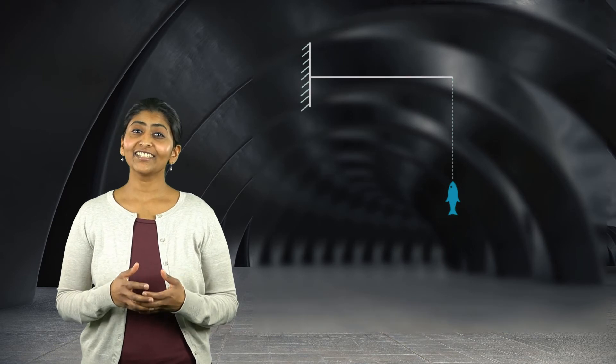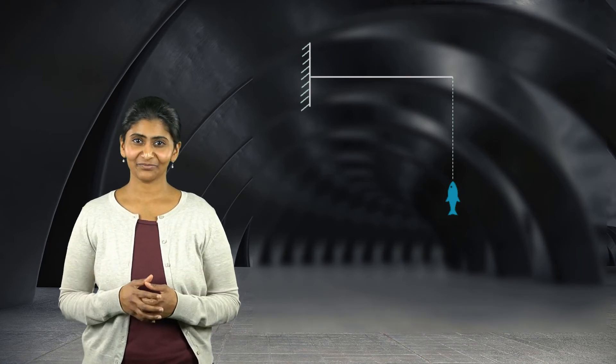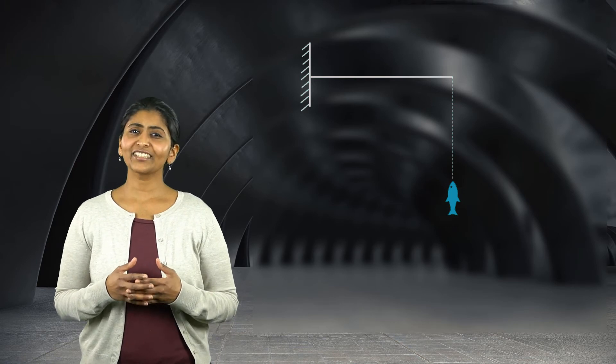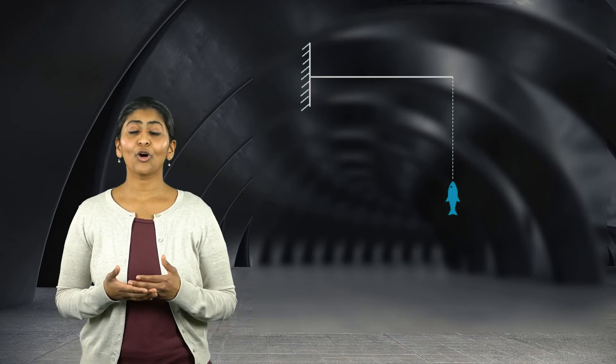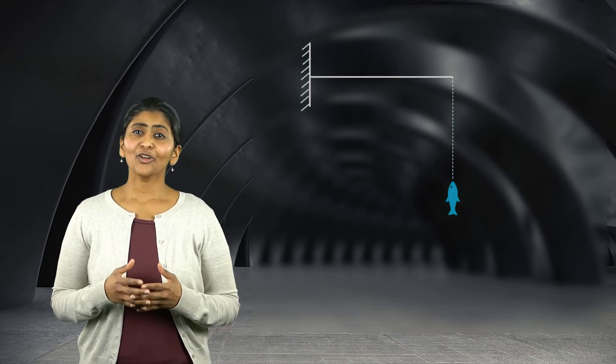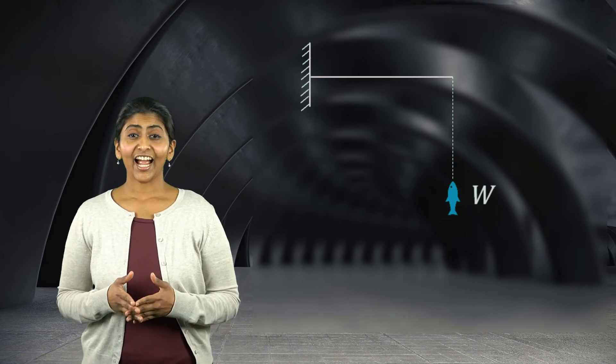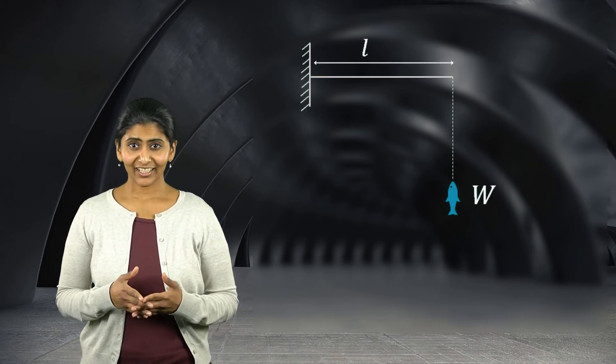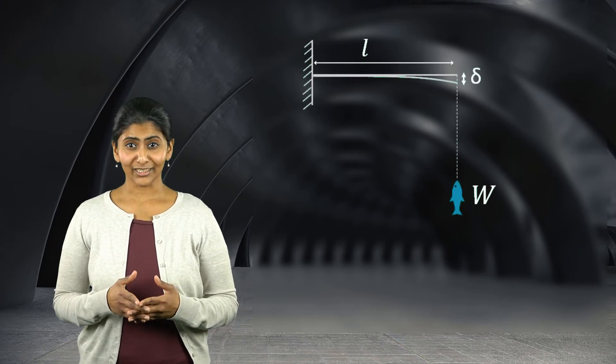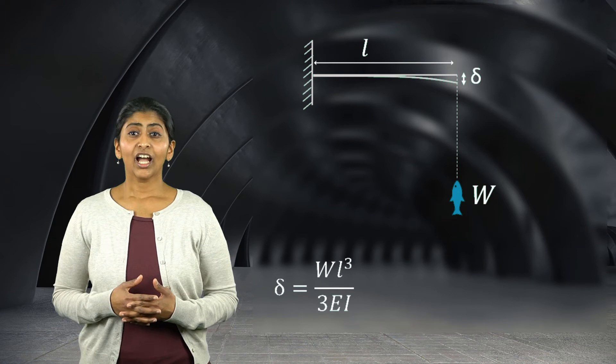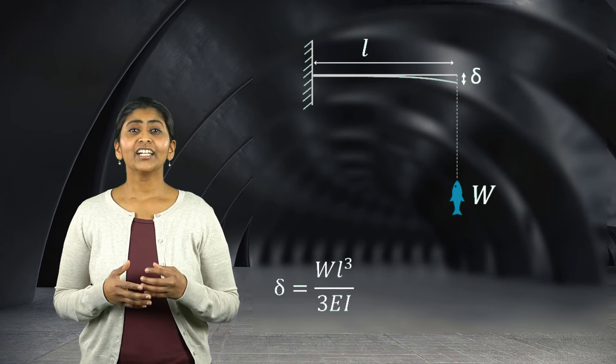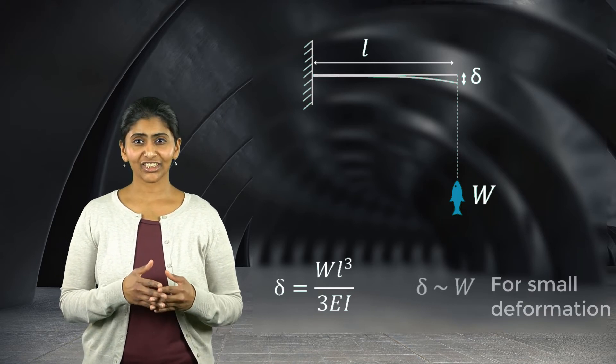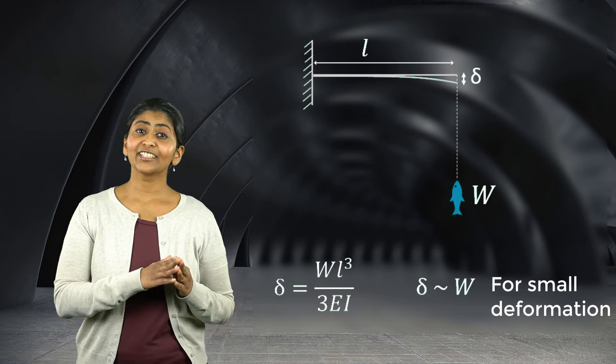Let's look at the example of a fishing pole to learn and see how change in shape matters. The fishing pole is a tall slender structure and it acts like a cantilever beam under the influence of fish weight. If the weight of the fish is W and the length of the fishing pole is L, then the deflection of the pole at the tip is given by this relation. When the length of the pole remains unchanged, we can see that this relationship reduces to a linear function between the tip deflection and the weight of the fish.